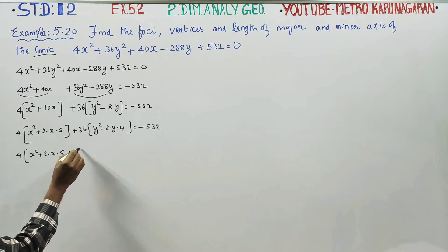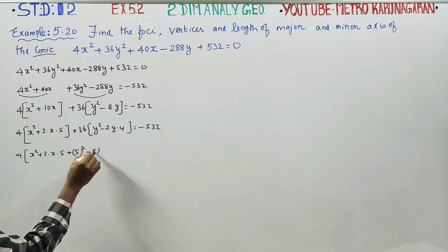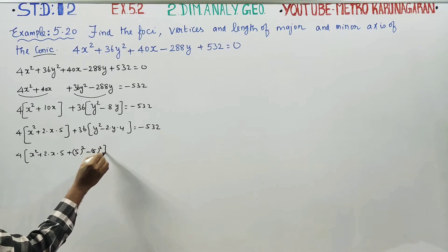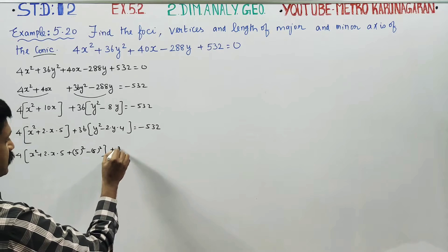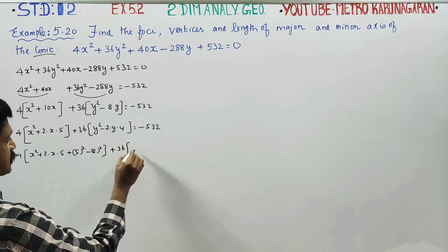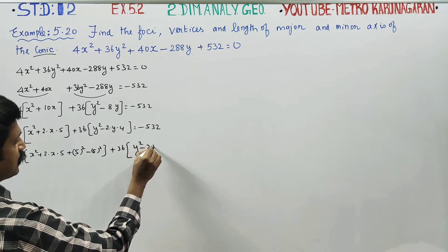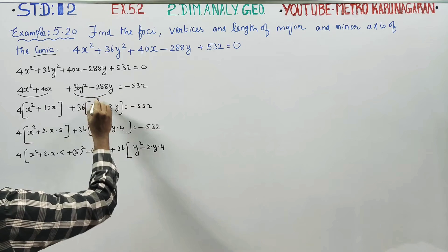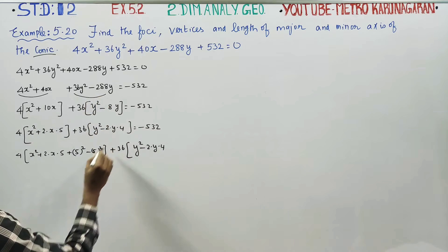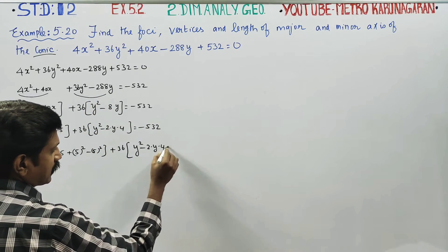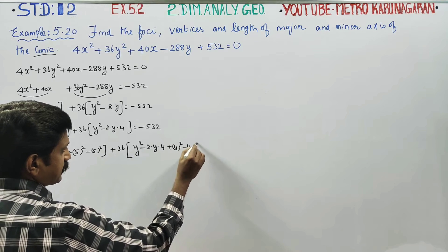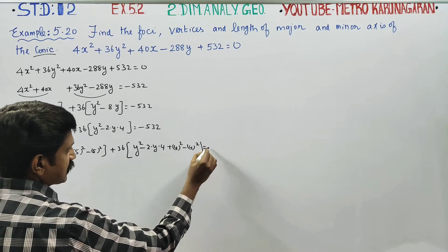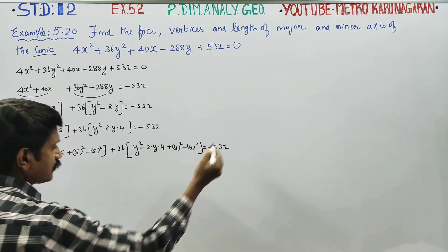We add and subtract the square of 5 for the x-group. For the y-group, y² − 2·y·4 requires adding and subtracting 4² = 16. After squaring and subtracting, this equals −532.